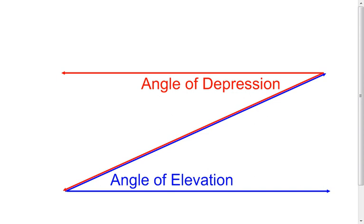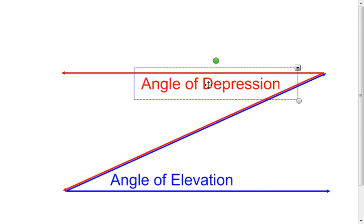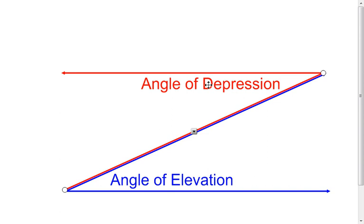First, we just need to know what they are. The first thing you need to know about angles of elevation or angles of depression is one side of those angles has to be horizontal. When I look at my angle of depression, here's my horizontal side of my angle, and then the other side is going down — it's depressing. One side is horizontal, the other side is going down.